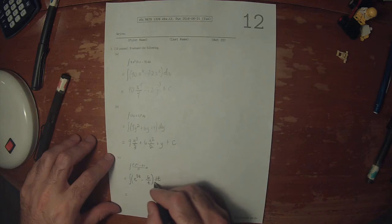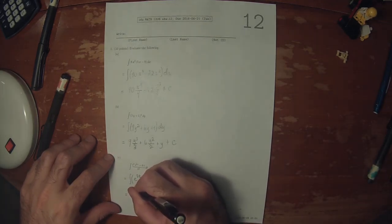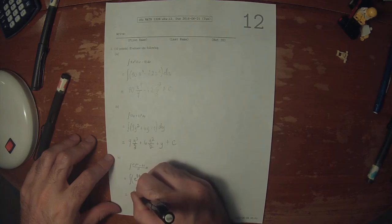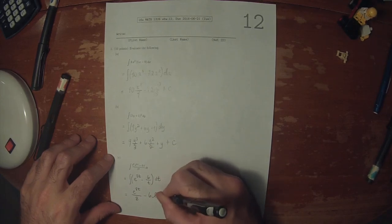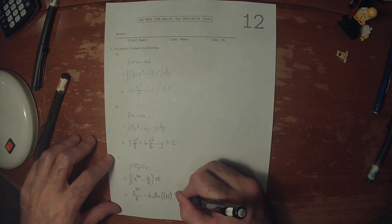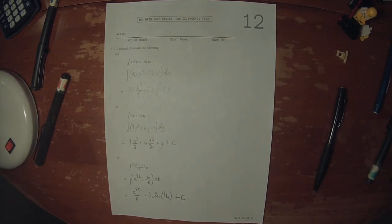And now each of these is an antiderivative that we know. So that's e to 8t divided by 8, minus 6 log absolute t, plus a constant.